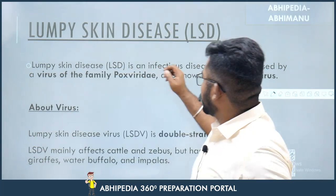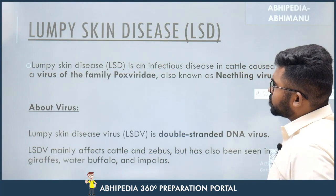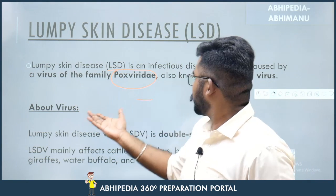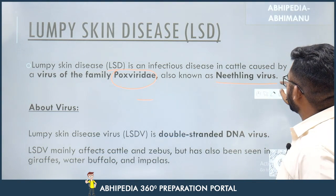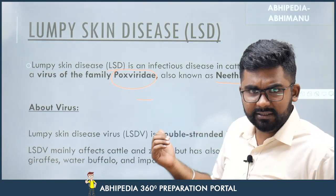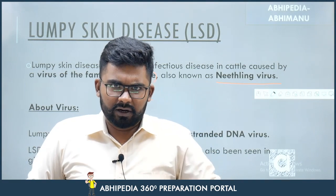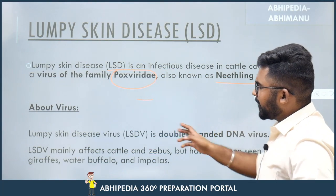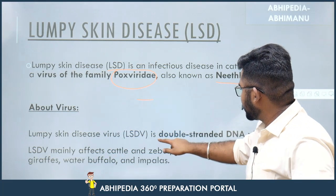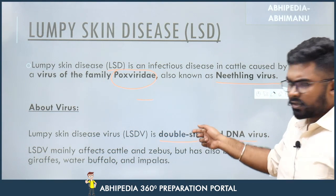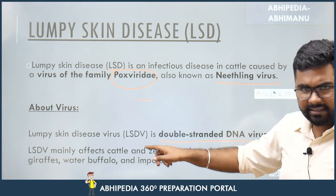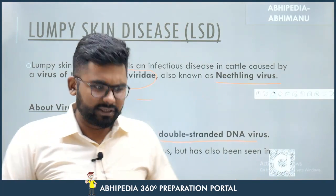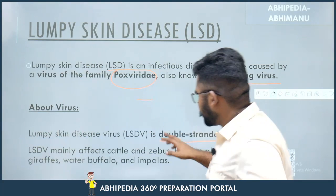Lumpy Skin Disease is an infection caused by a virus of the family Poxviridae — you need to remember this name. It is also known as the Neethling virus. In options, either name may be mentioned, so be careful: it belongs to the Poxviridae family and its name is Neethling virus. Regarding the virus itself, LSD is a double-stranded DNA virus — this is an important fact to remember.